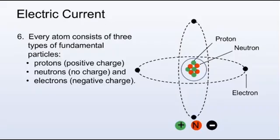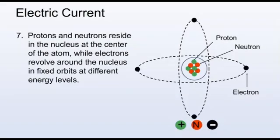Every atom consists of three types of fundamental particles: protons, which have a positive electrical charge; neutrons, which have no charge; and electrons, which have a negative electrical charge. Protons and neutrons reside in the nucleus at the center of the atom, while electrons revolve around the nucleus in fixed orbits at different energy levels.